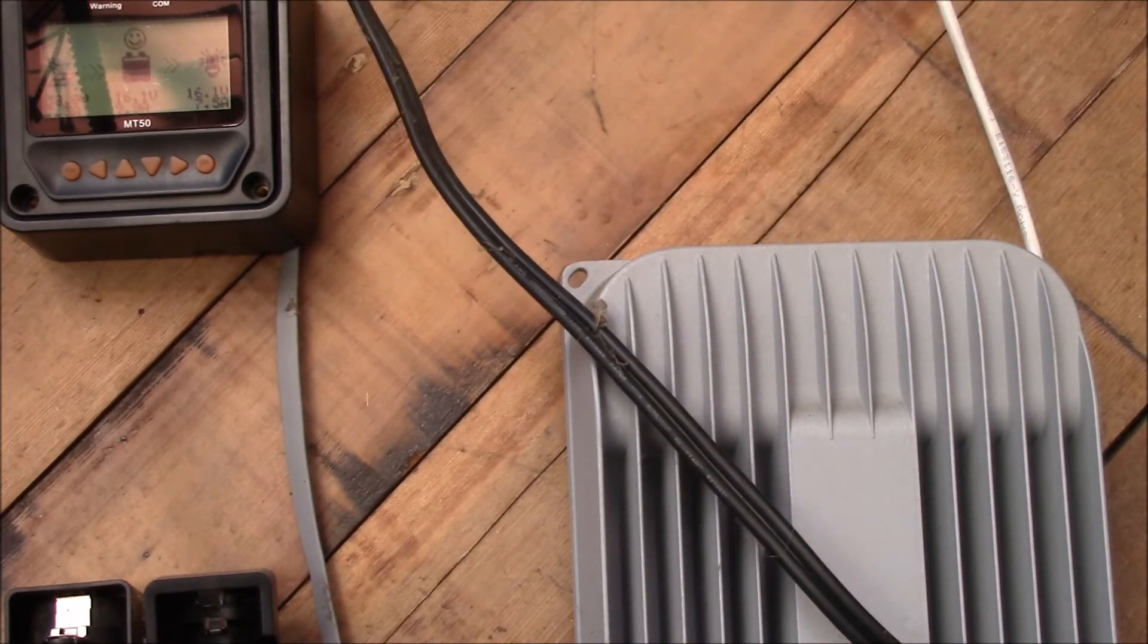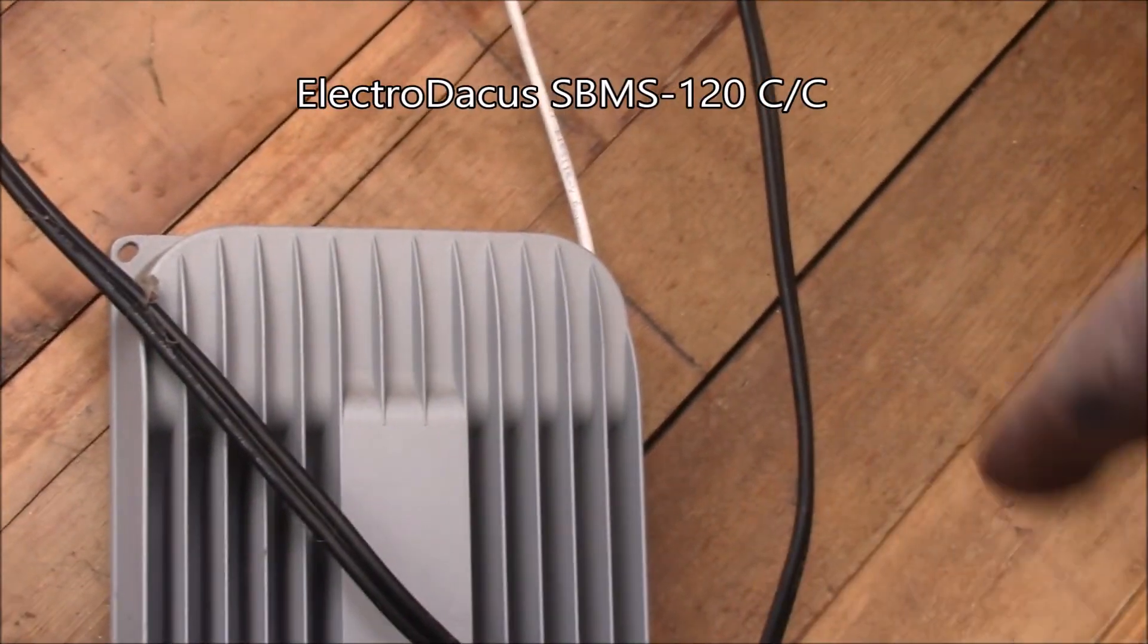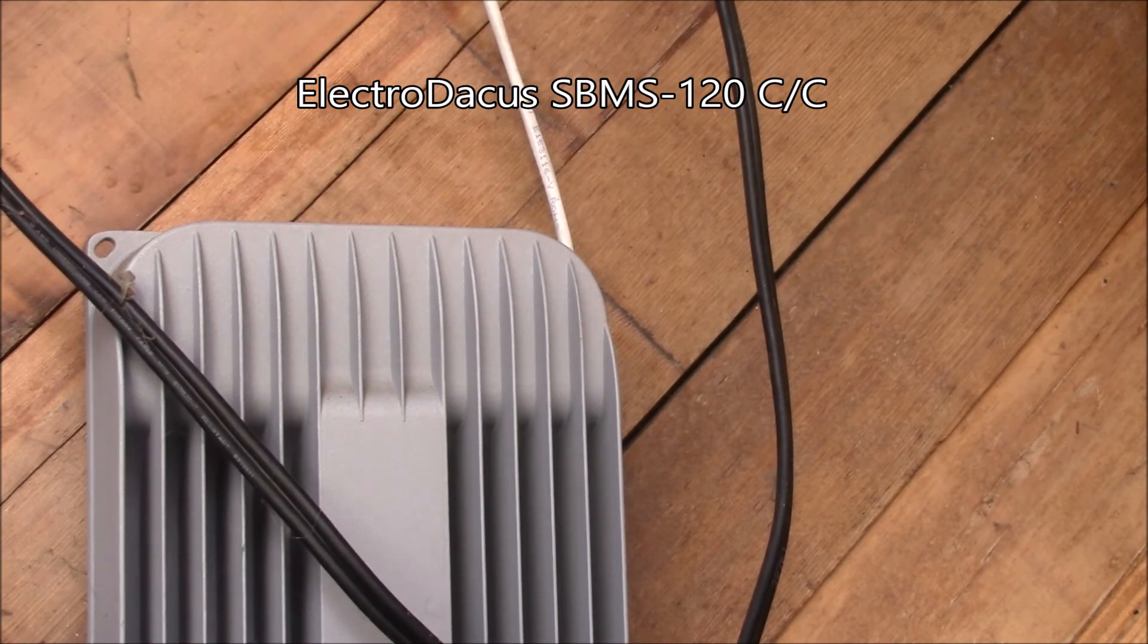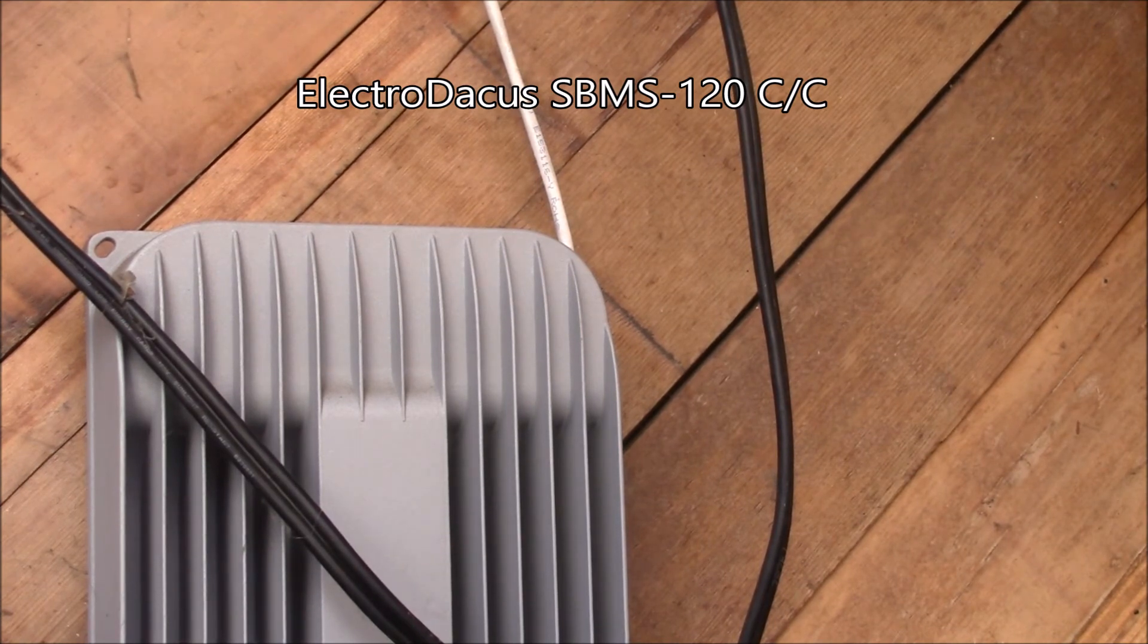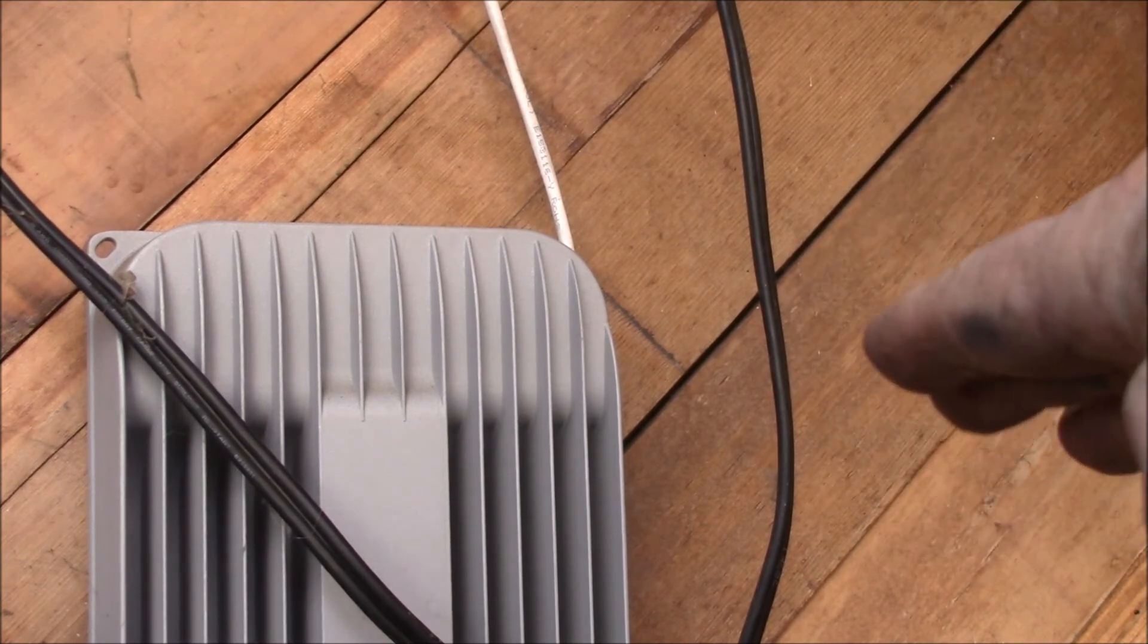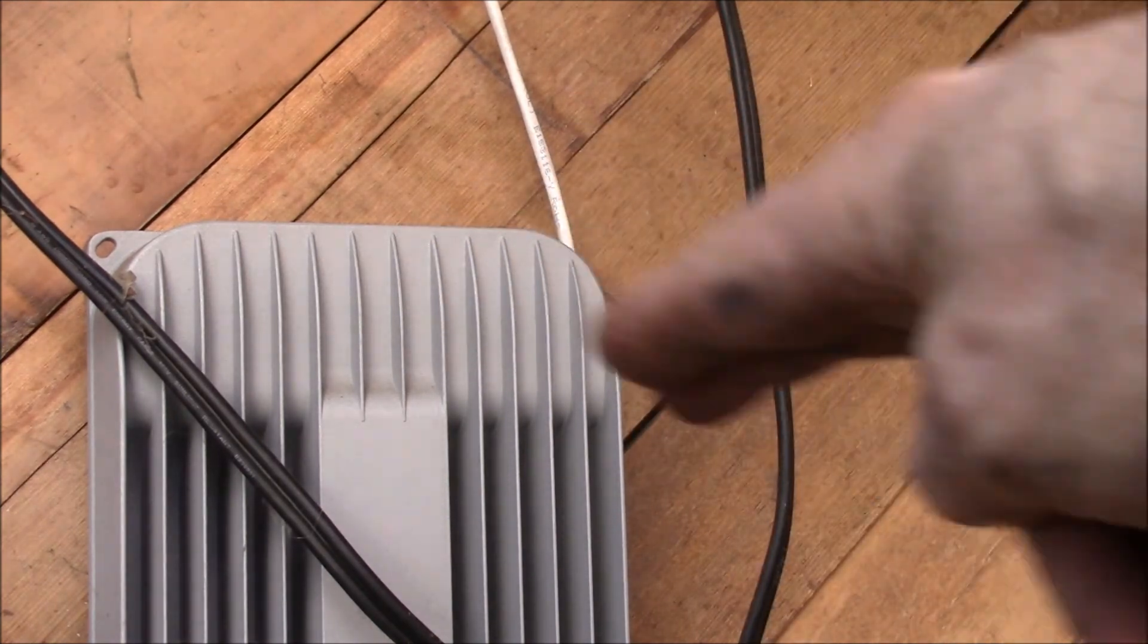The other thing I want to do here is I've got a second charge controller. I have one of Dason's SBMS controllers for the lithium batteries. It's pulse width modulated, so for that I need to put all the solar panels in parallel and then feed the SBMS.